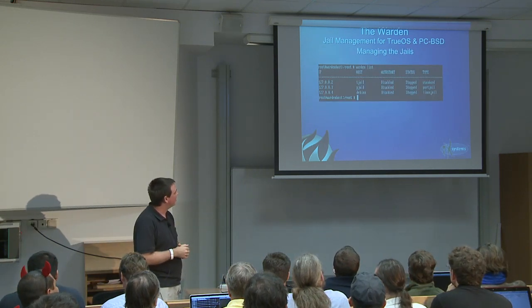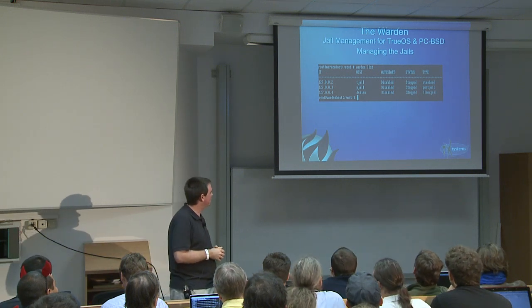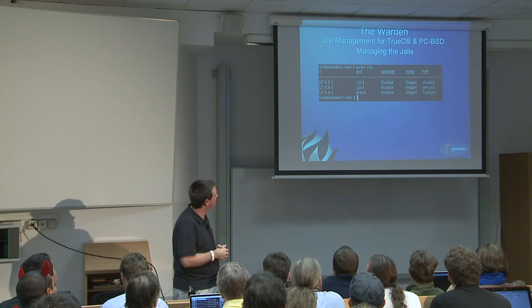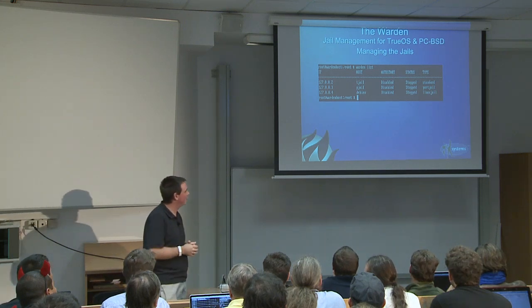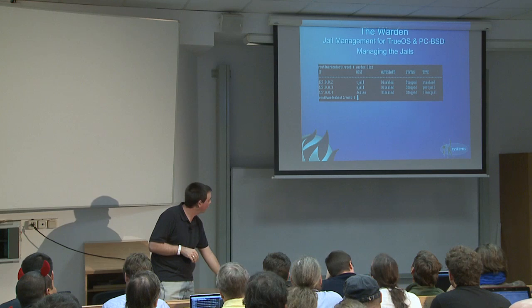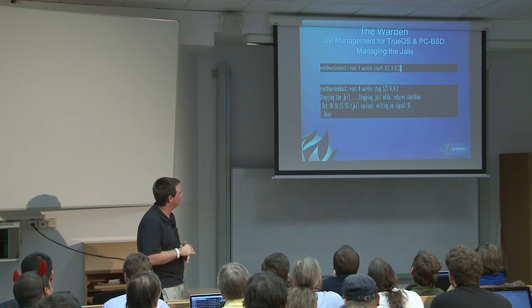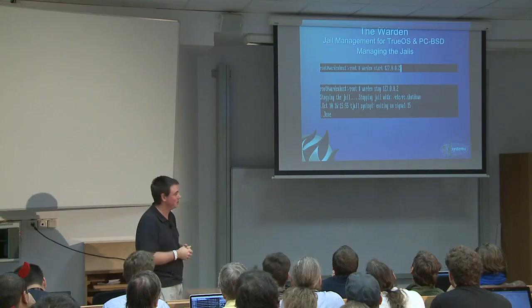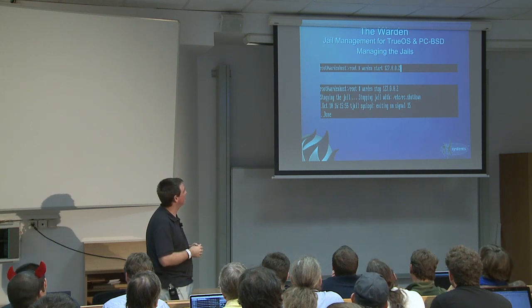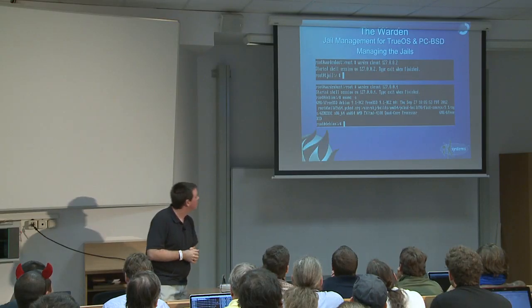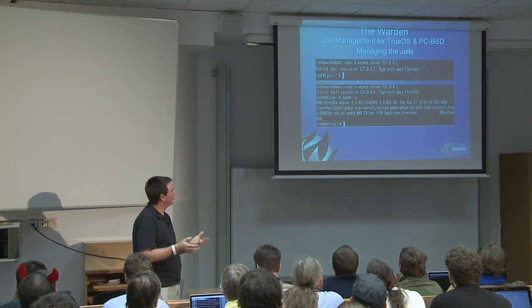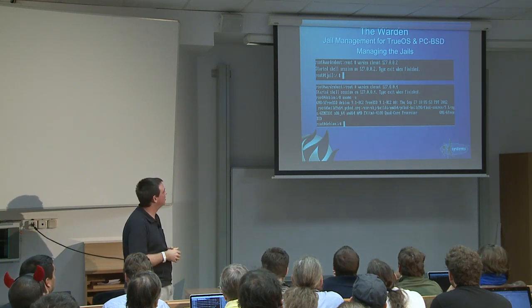After we've set up our jails, referencing them is easy — just run 'warden list'. It'll give you a quick IP list, whether they're set to auto-start, status, and the type, so you can quickly look and see which are Linux jails versus standard jails. Starting is very simple: just 'warden start' then the IP address — that's the unique identifier. Stopping is the same thing. For logging into the jail, we have a 'chroot' command which is actually running jail in the background to log you into the jail session.